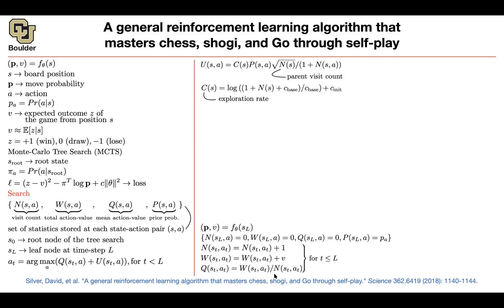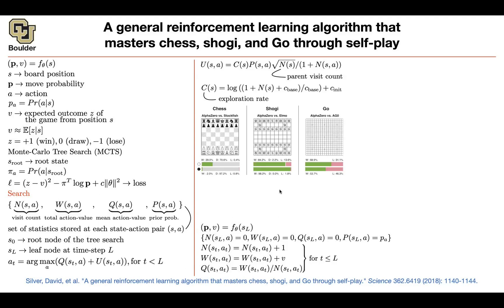The same framework is going to let you play chess, Shogi, and Go. Stockfish is a famous software for chess, Elmo is for Shogi, and AlphaGo Zero is for Go. The method we are covering here is AlphaZero.